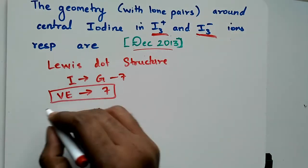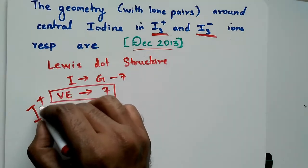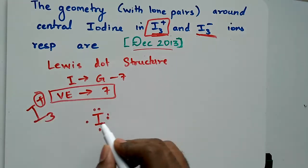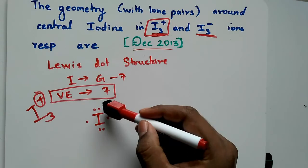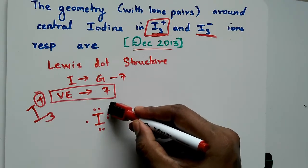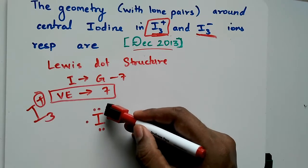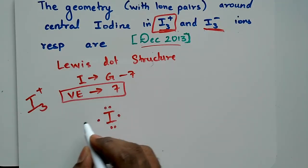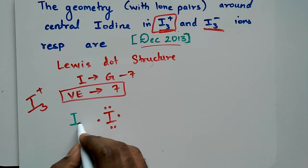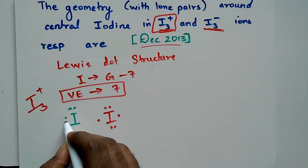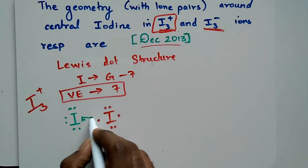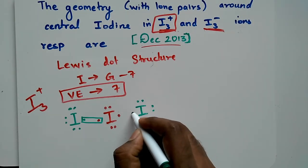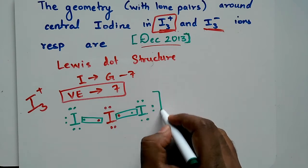Now, when we consider I3+, there is a plus charge. Since there is a plus charge, that means a loss of electron, so I am going to remove one electron. This iodine is now in the plus state. Regarding the peripheral iodines, each also has 7 valence electrons - one will pair with this electron and another will pair here, and overall we will have a plus charge.